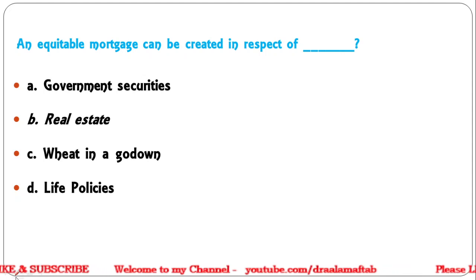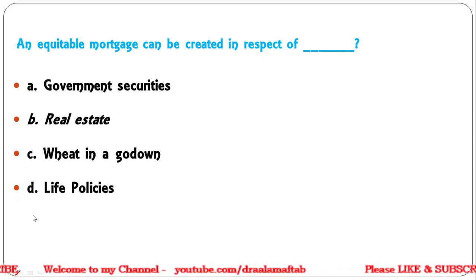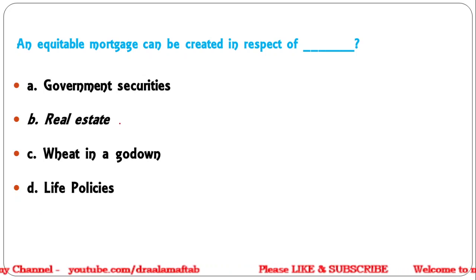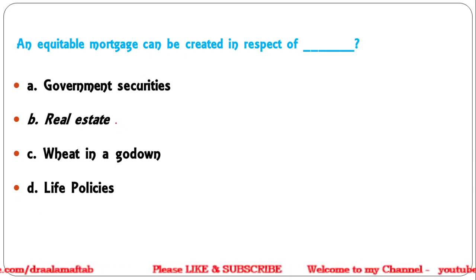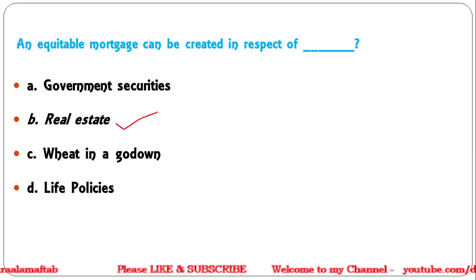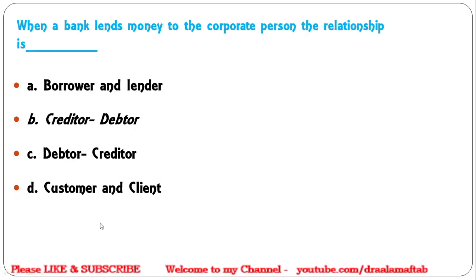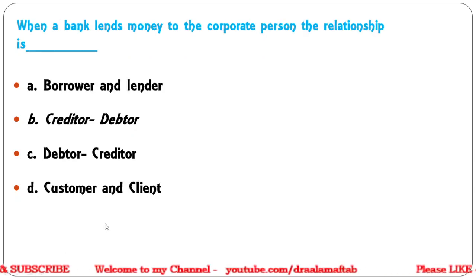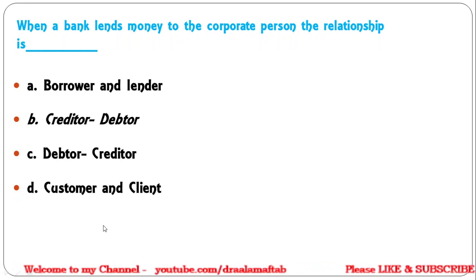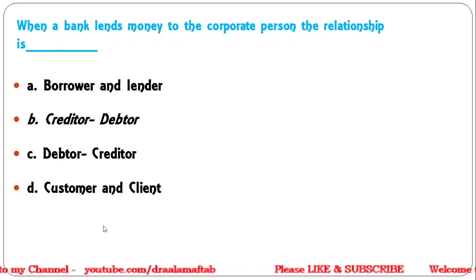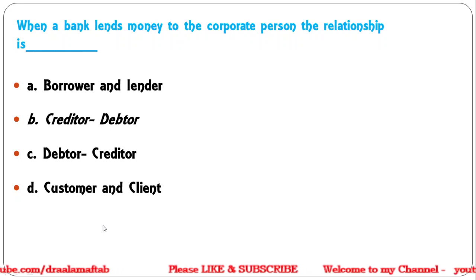Next question: An equitable mortgage can be created in respect of what? Options: Government securities, Real estate, Wine godown, or Life policies. The correct answer is Real estate — an equitable mortgage can be created in respect of real estate.